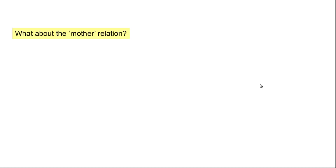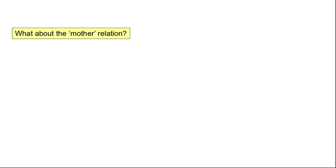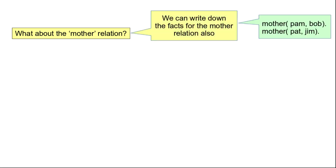Now let's say we also want to represent the mother relation — we want to capture who is the mother of whom. One way to capture this relation is to add new facts about the mother relation. When we add new facts it may be something like: Pam is the mother of Bob, Pat is the mother of Jim, and so on. So we can add a lot of facts to capture the mother relation. However, there is a different approach.